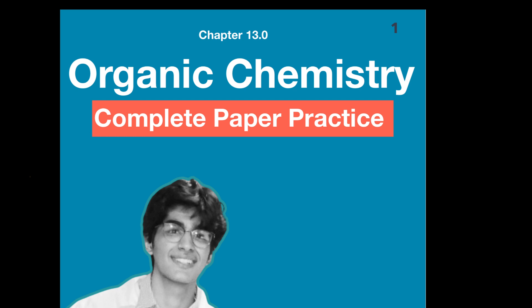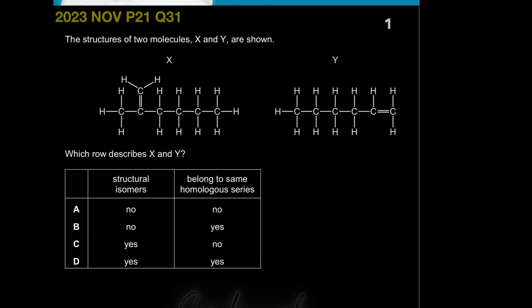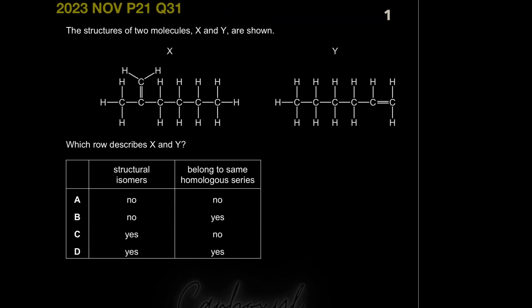The first MCQ shows two structures of molecules X and Y. Right off the bat, molecule X has a carbon-carbon double bond and molecule Y also has a carbon-carbon double bond, which means both molecules belong to the same family — the alkene family. The functional group is the carbon-carbon double bond, so X and Y both belong to the same homologous series, which is the alkene family.